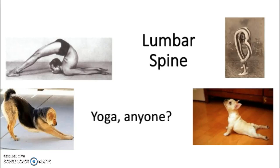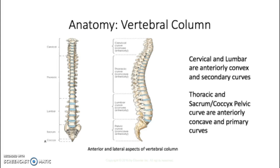Today we're going to talk about the lumbar spine, one of the most common areas to have back pain. As a reminder, the cervical and lumbar spines are anteriorly convex and they are secondary curves. Thoracic and sacrum/coccyx, or the pelvic curve, are anteriorly concave and primary curves.